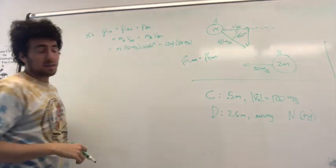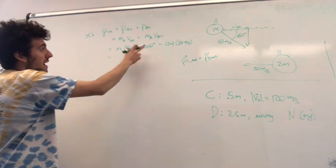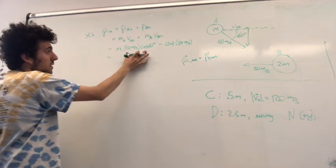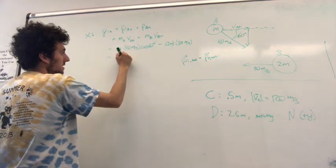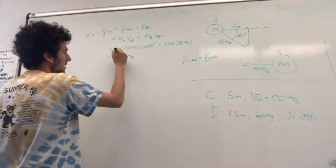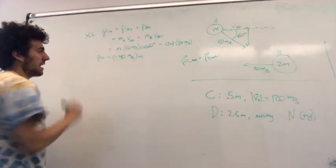So we don't know what M is, but hopefully that'll cancel out later on. We have cos 60, which is a half, times 40, so this is 20 minus 60, where we get negative 40 meters per second times M is our initial x momentum.